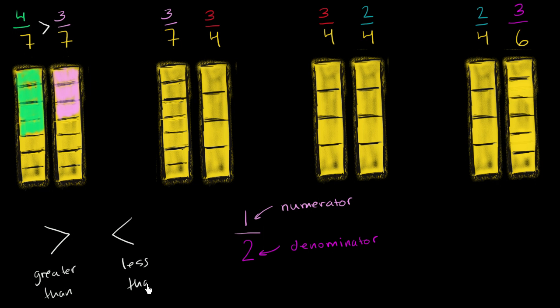And the way that I remember it is that the greater than symbol, either symbol, the small pointy side is always on the side of the smaller number and the big open side is always on the side of the larger number. So here big open side is opening towards the 4 sevenths, small pointy side opening to the 3 sevenths. 4 sevenths is greater than 3 sevenths.